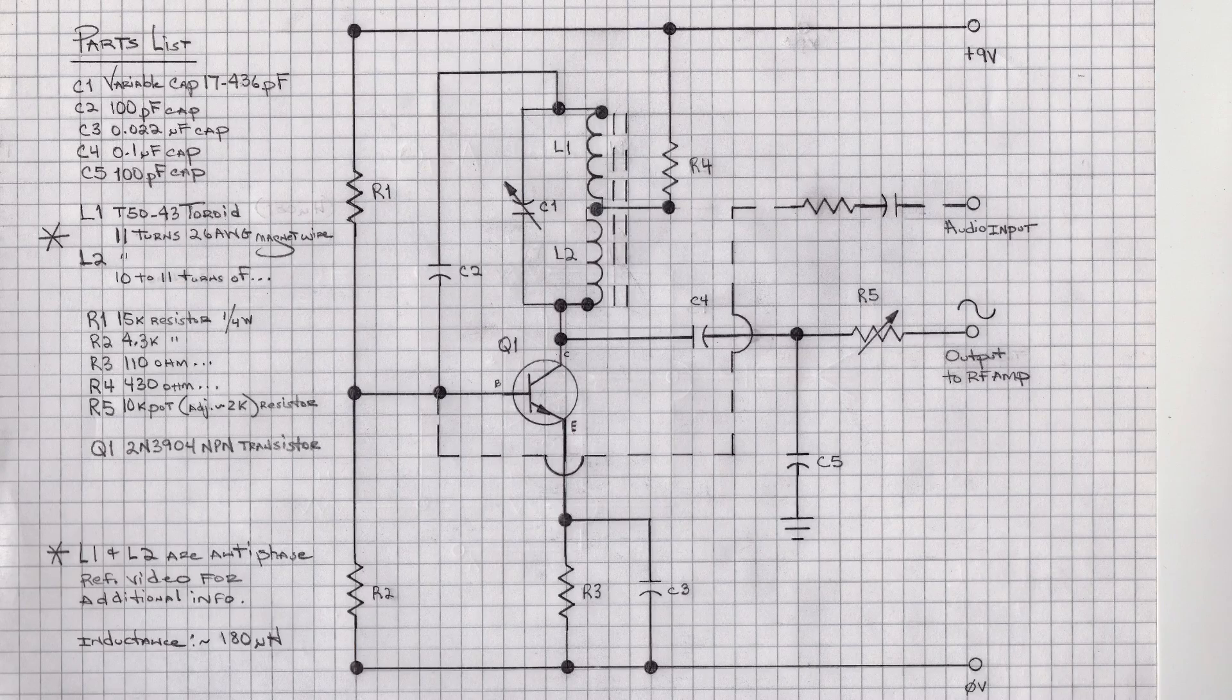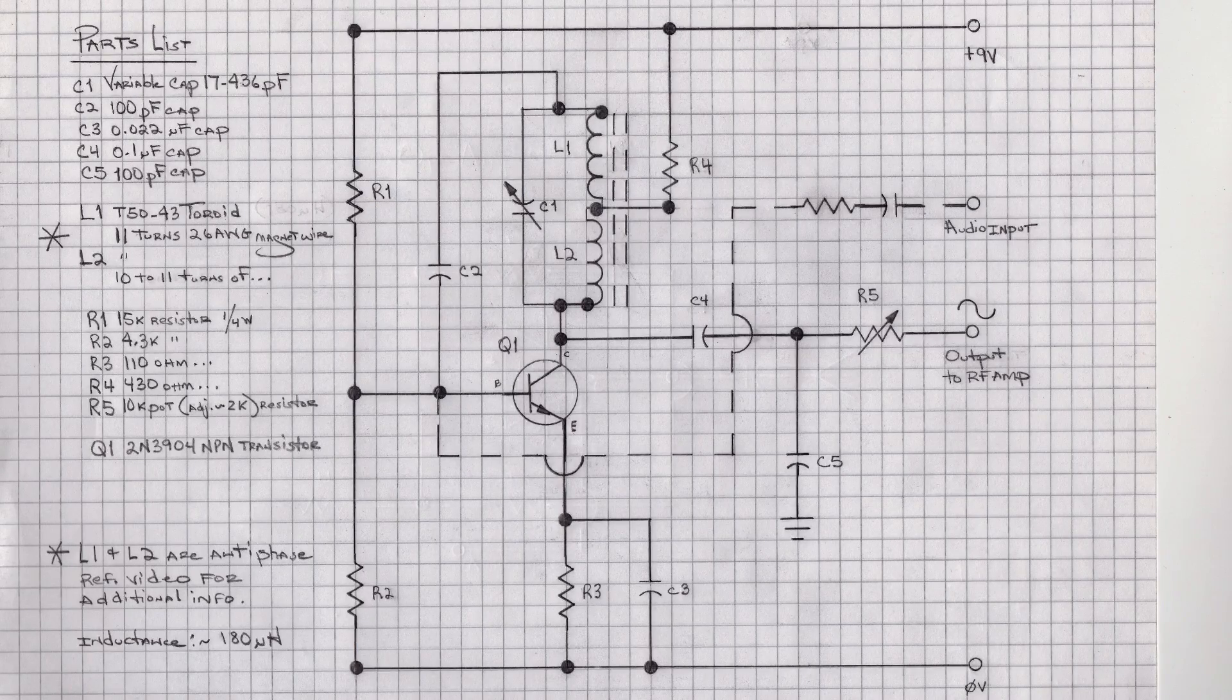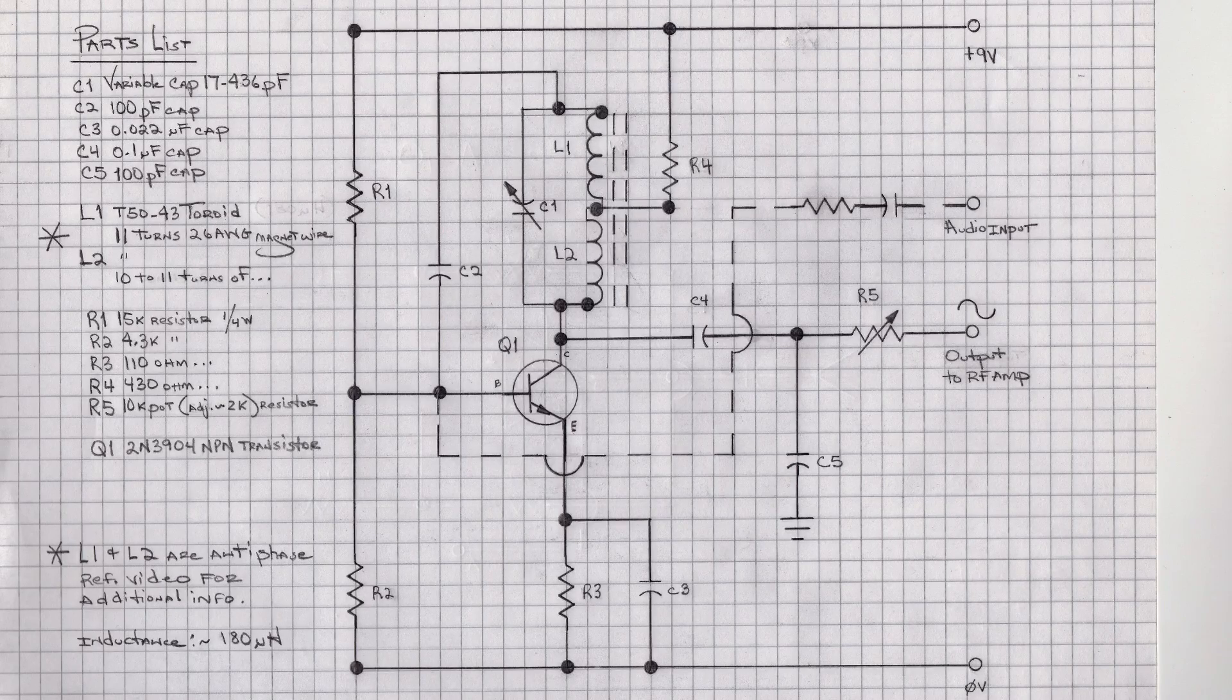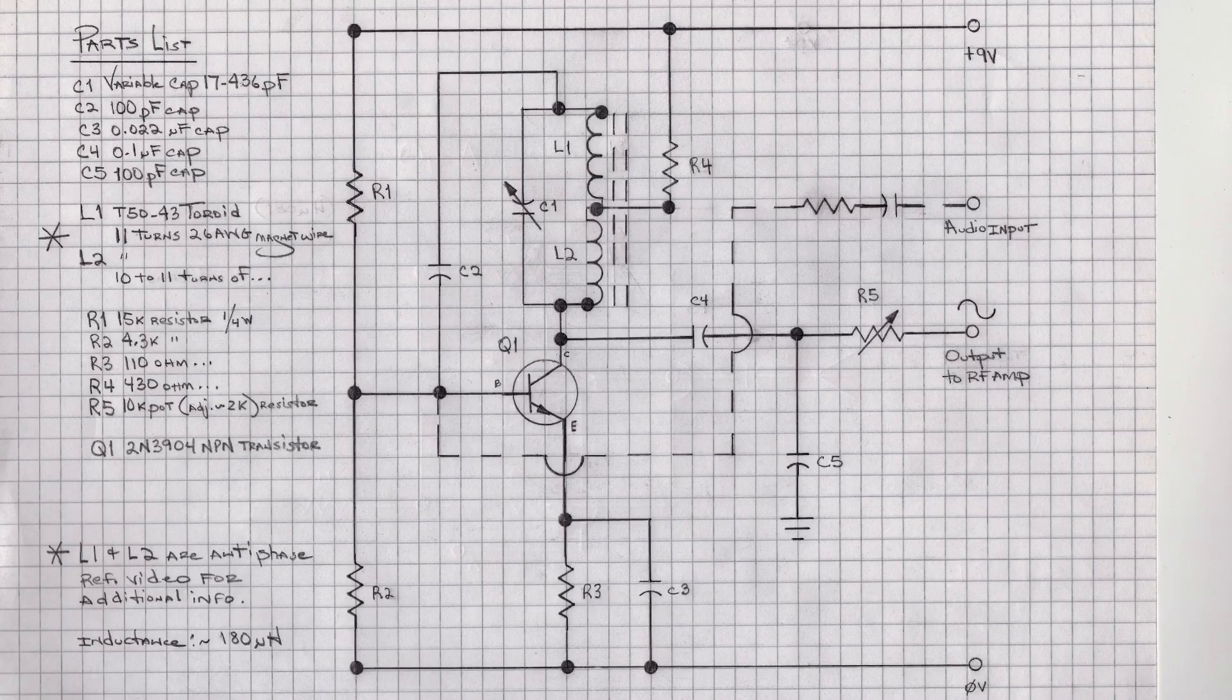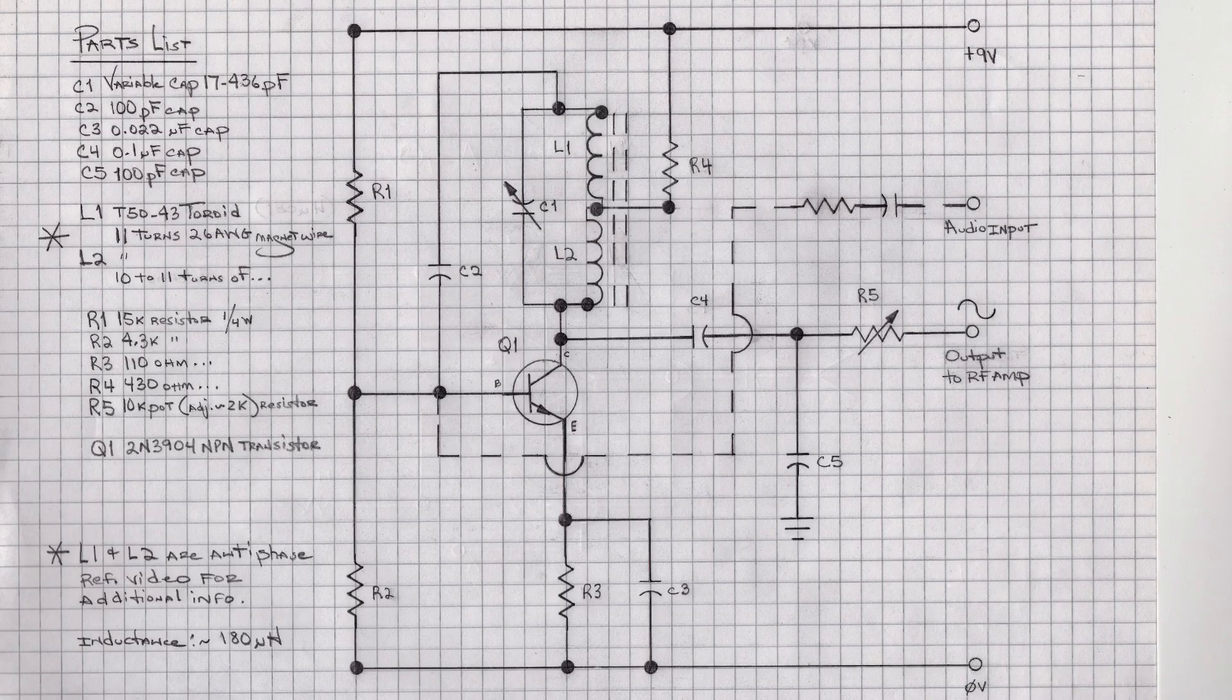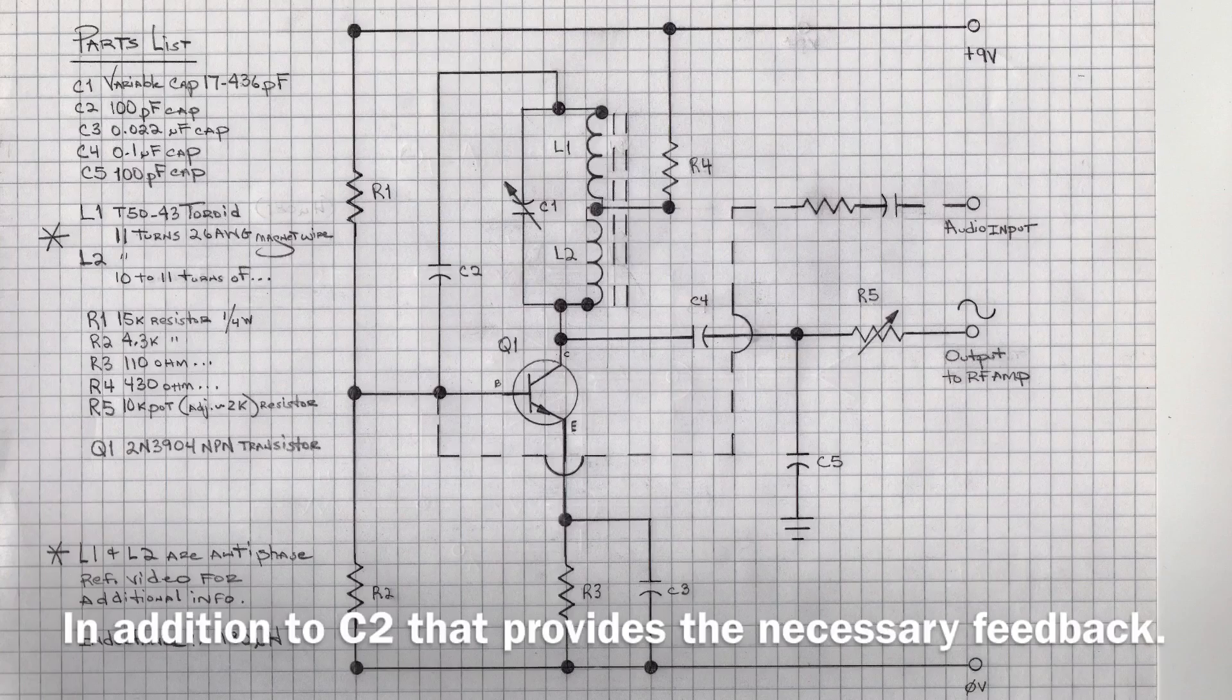Now if you take a closer look here at L1 and L2 on the schematic, what I'm trying to indicate is that the coil itself around the T50-43 toroid that I used is wound antiphase, or in opposite directions. So that's important for this particular design to allow the oscillator to actually function.